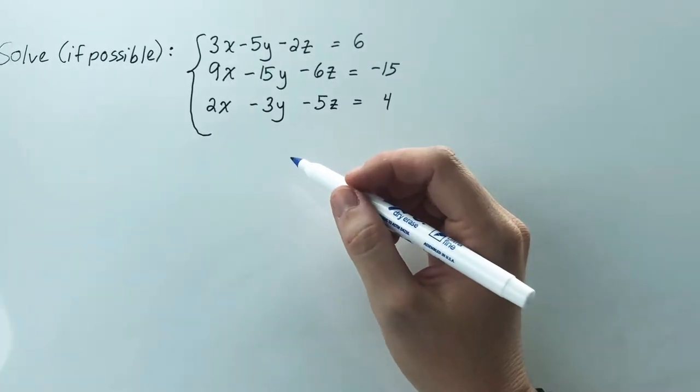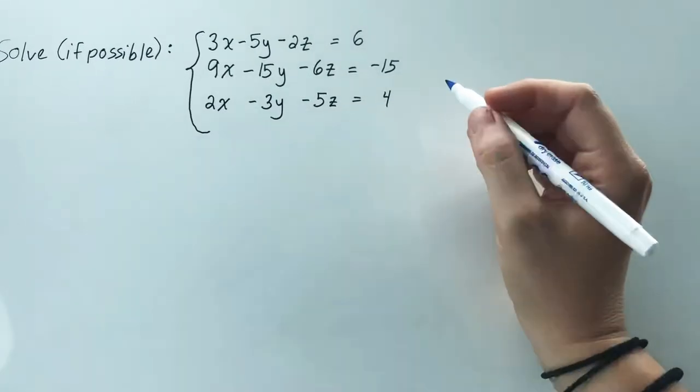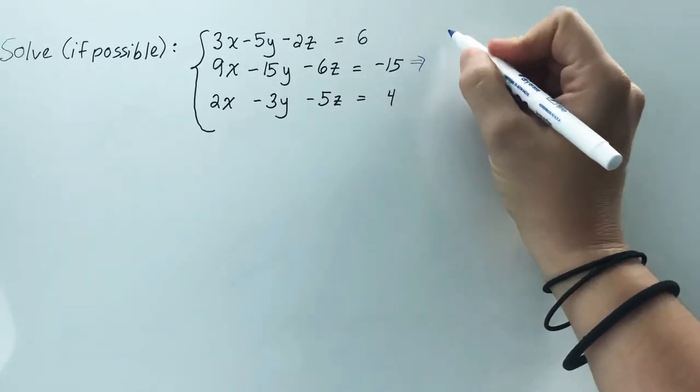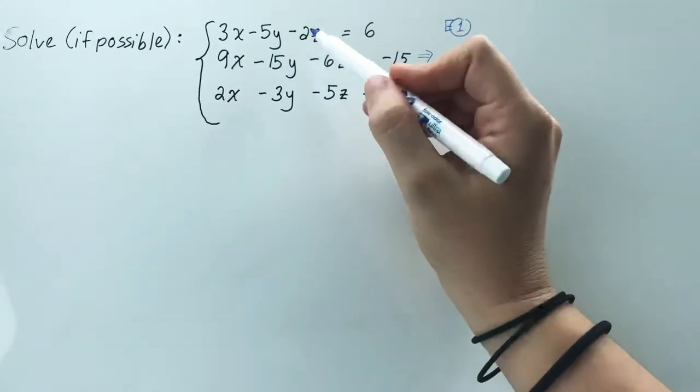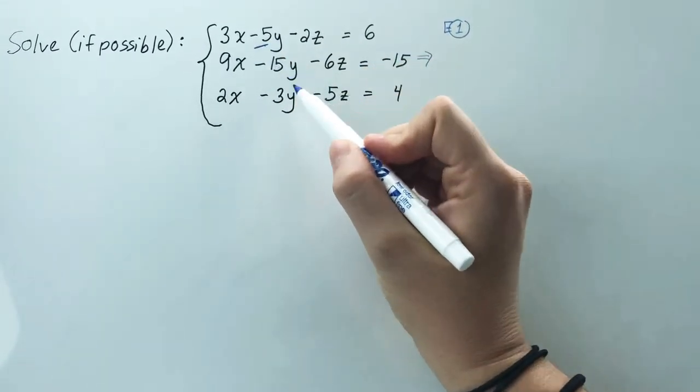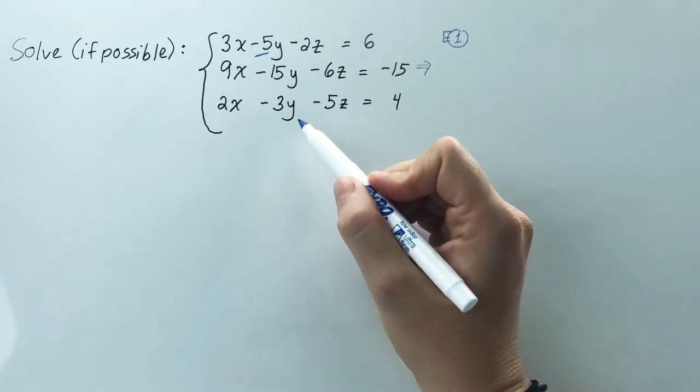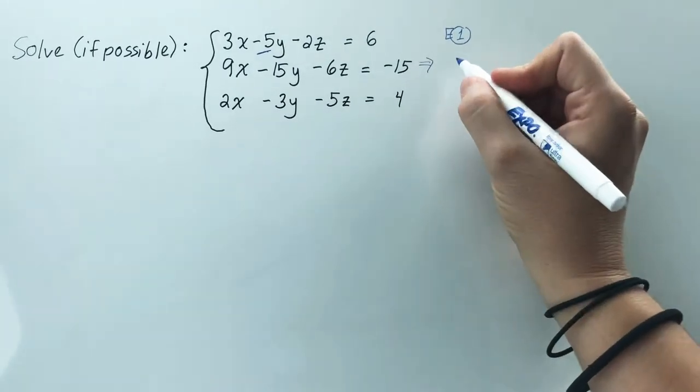To do that, I would then look at equations, let's say, 1 and 3. So if you look at equation 1 with me, currently you have negative 5 in front of y. And if you look at equation, I said 1 and 3, I'm sorry, I meant equations 1 and 2.